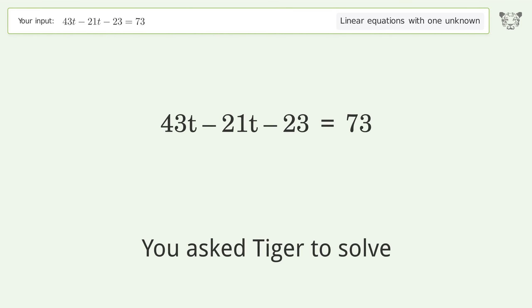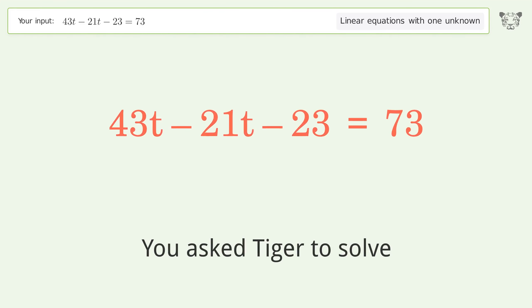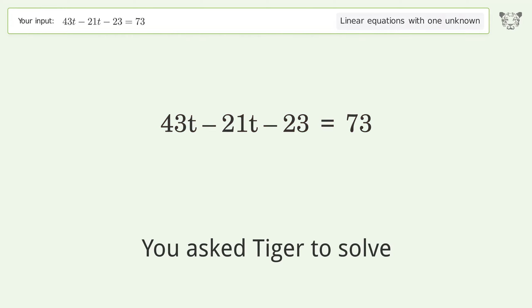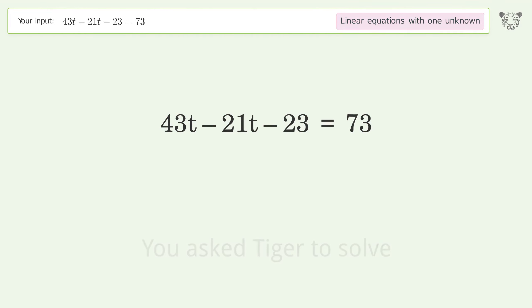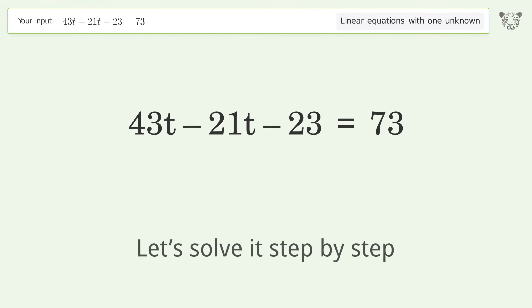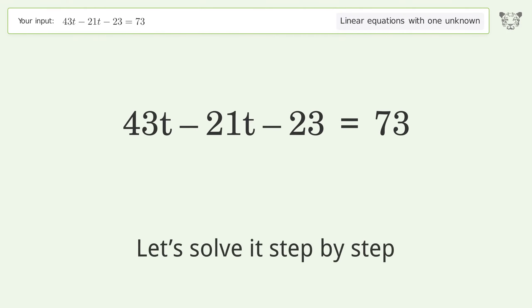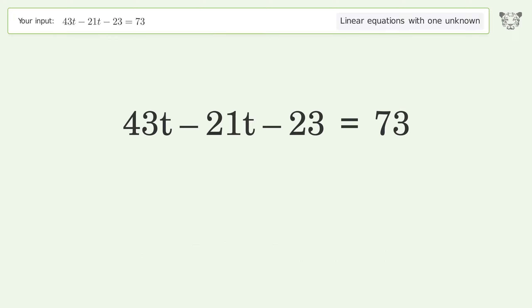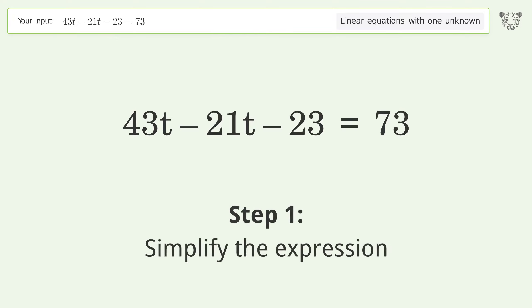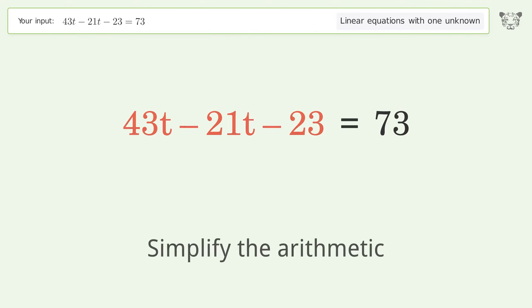Tiger solves this problem, which deals with linear equations with one unknown. The final result is t equals 48 over 11. Let's solve it step by step — simplify the expression and simplify the arithmetic.